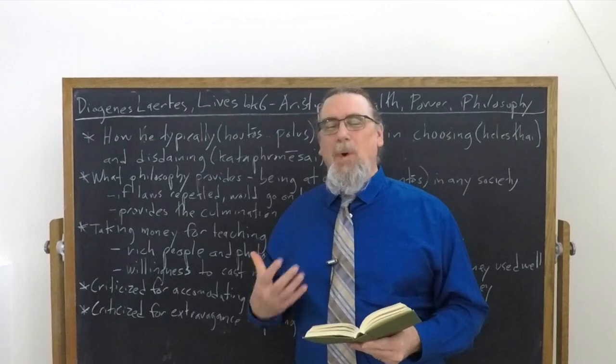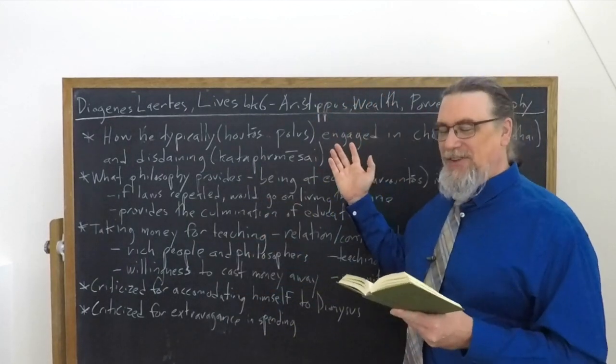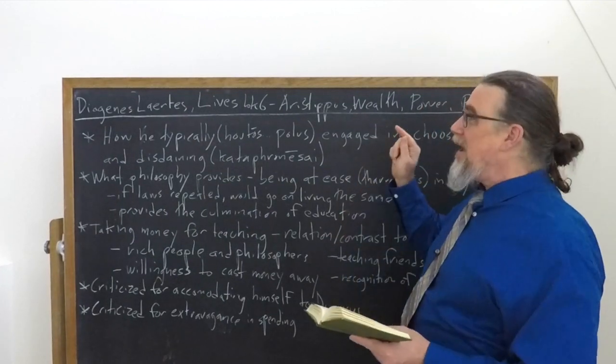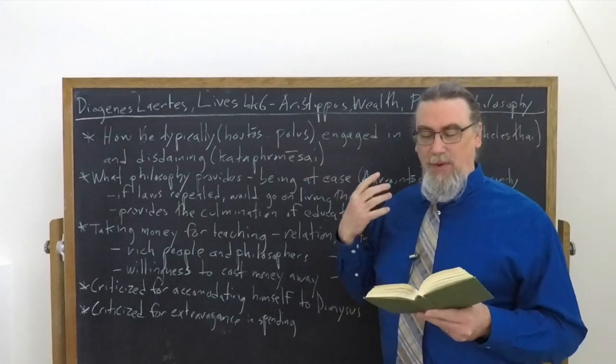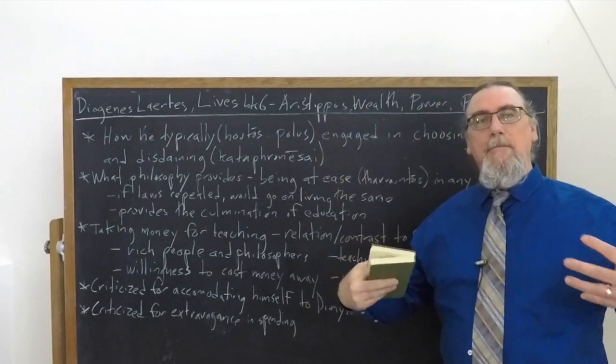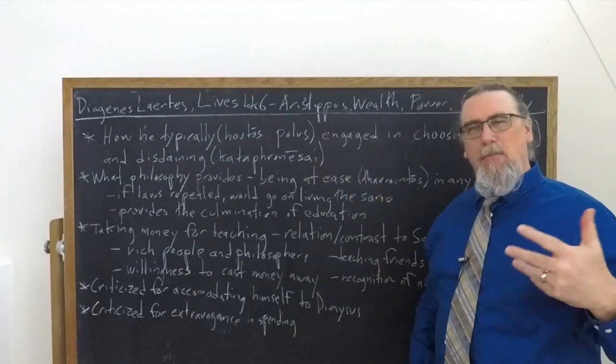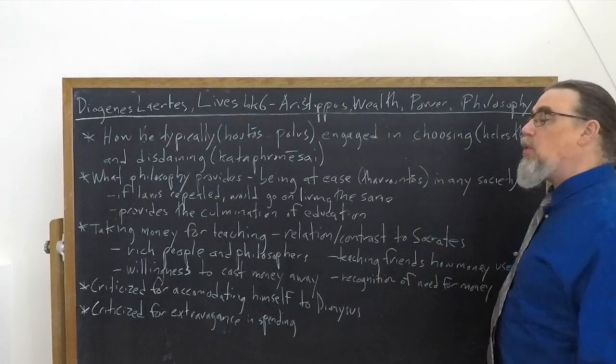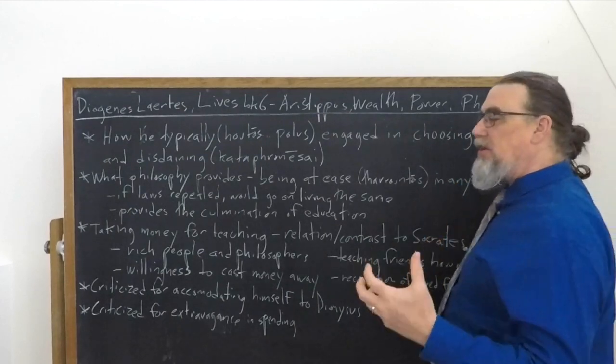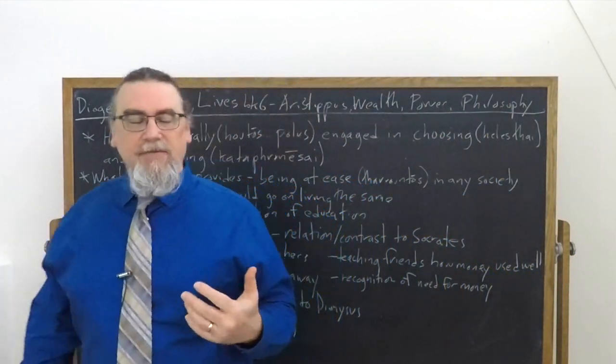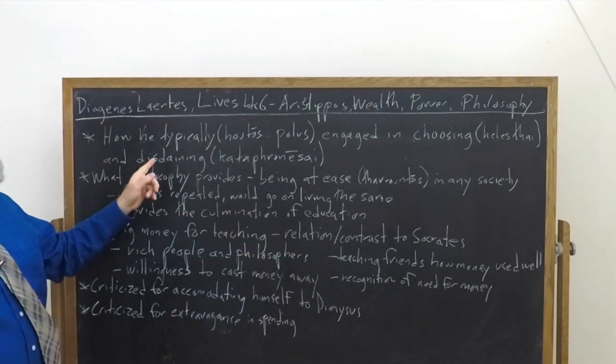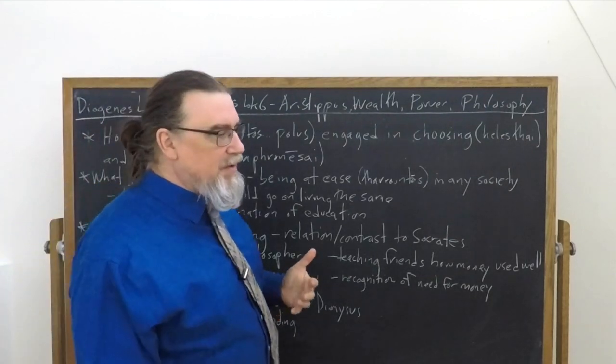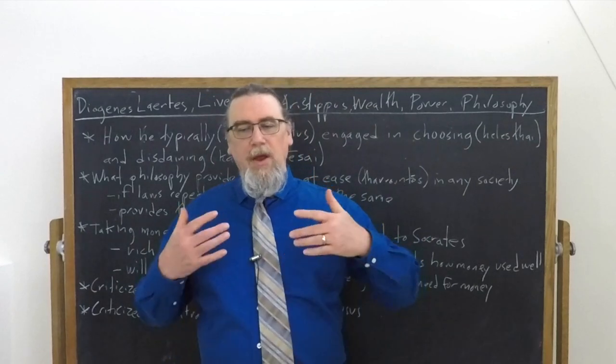So what is this displaying? Diogenes says something very interesting here. This shows us these sort of incidents, how Aristippus typically, and the words here in Greek, hutos, in what manner, paulos, most often how he generally is going to engage in. And then he uses two important terms here, choosing helesthai, to select one thing instead of another, and then disdaining is how it's translated, but you could also say holding in contempt or valuing very lowly.